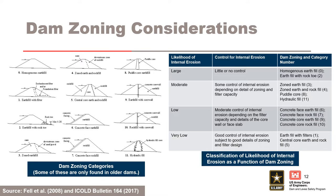Dam zoning considerations. Dam zoning can be grouped based on their capability of providing control for internal erosion in the embankment. This is based on the provision for, or lack of, filters and statistics of failure and incidents in Foster et al. 2000. It does not take account of details of dam zoning, design, and construction. Therefore, it is only a general guide.